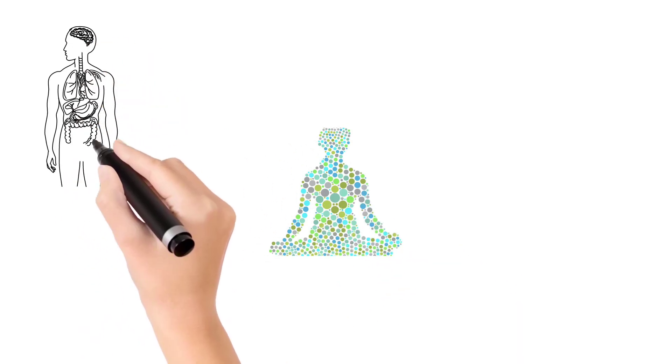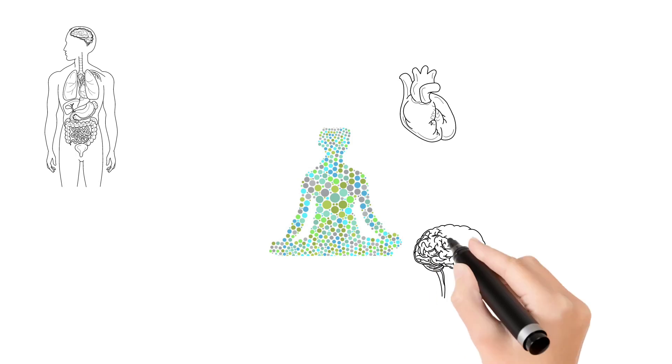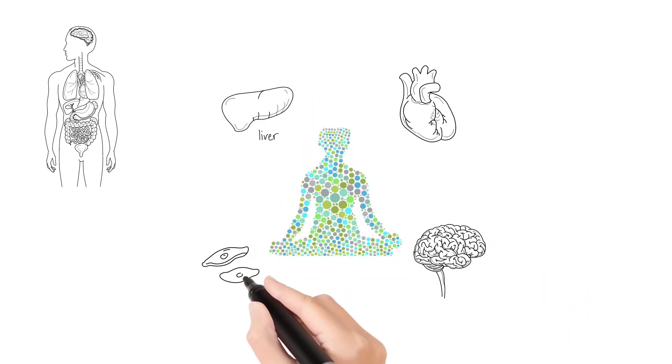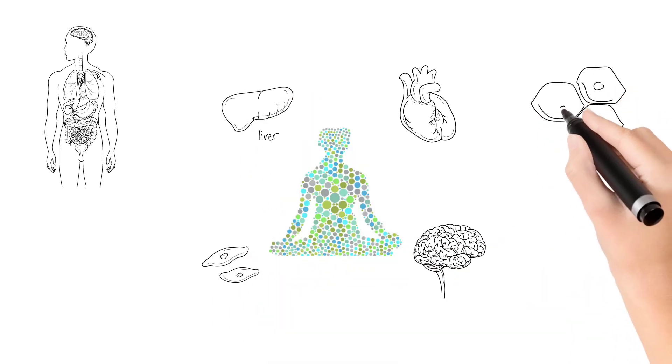Do you know that our body is made up of trillions of cells? Every part of our body, every organ, every tissue—from heart to brain to liver to muscles—everything is made up of cells.